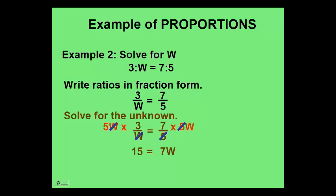Now all that's left to do is to get rid of the 7 in front of the w, and we can do this by dividing both sides by 7. Leaving us an answer of 15 sevenths, or 2 and 1 seventh as a mixed fraction, or 2.14 as a decimal rounded to 2 decimal places.